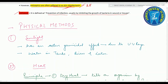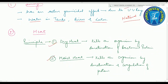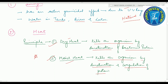Sunlight has an active germicidal effect due to ultraviolet rays. It is a natural method of sterilization for water in tanks, rivers, and lakes. Regarding heat, two important principles: dry heat kills organisms by denaturation of bacterial protein, while moist heat kills organisms by denaturation and coagulation of protein. This is the main difference between the principles of dry heat and moist heat.